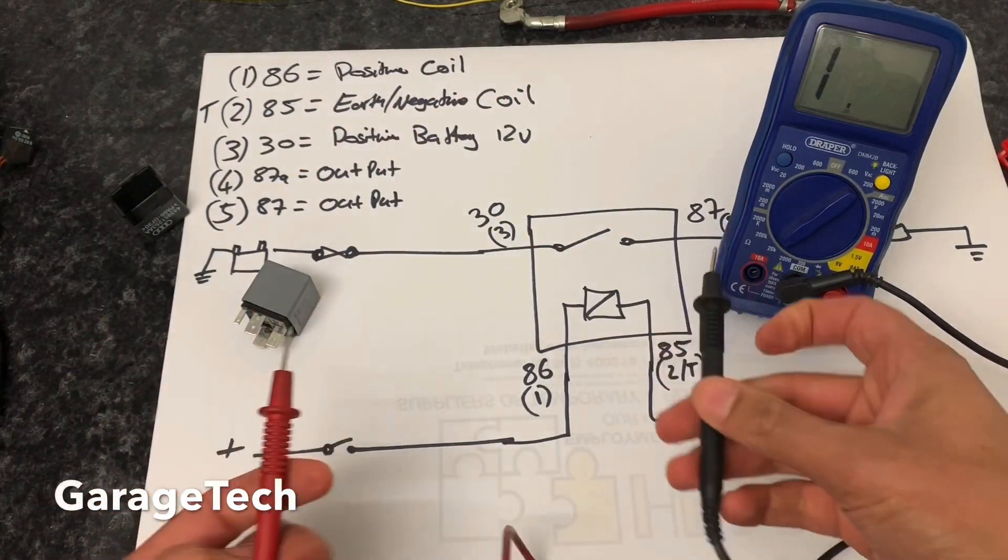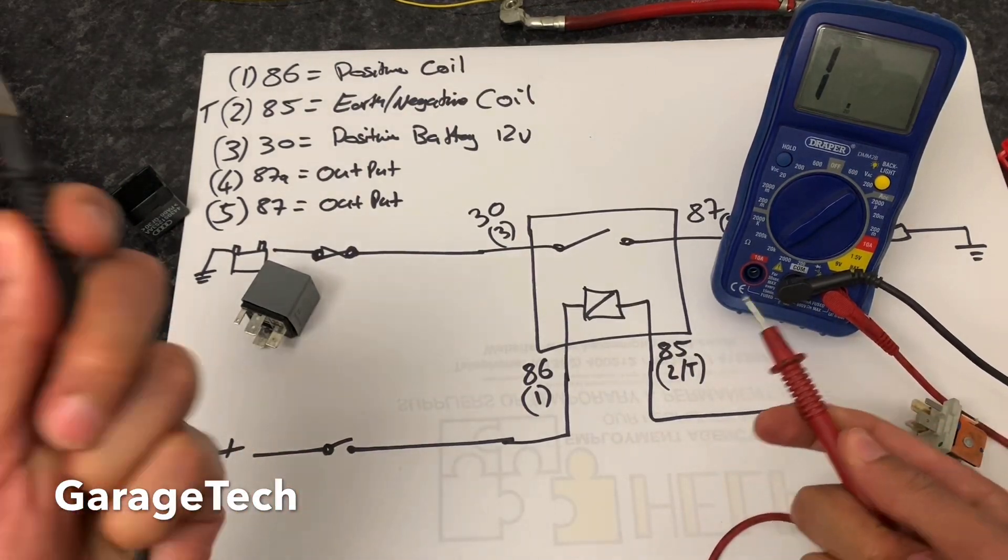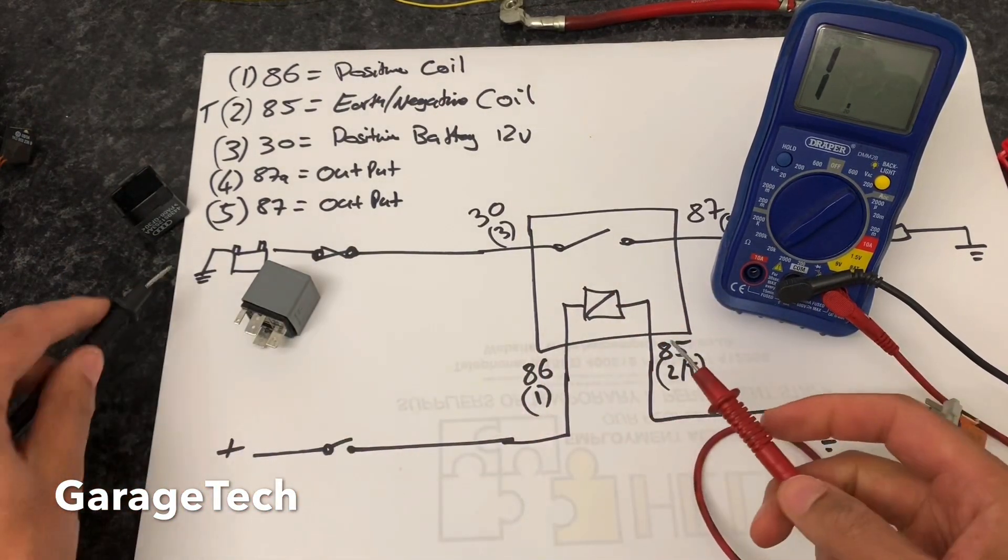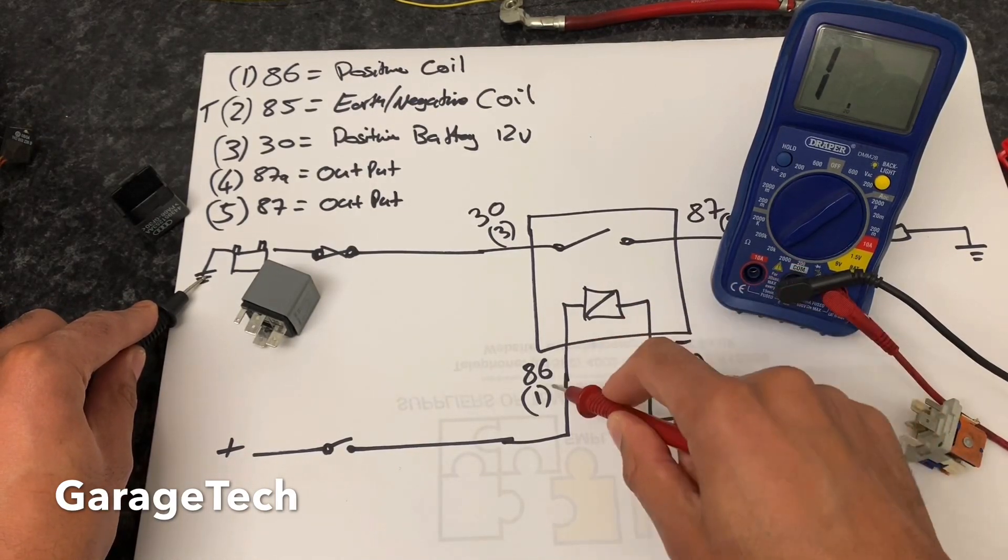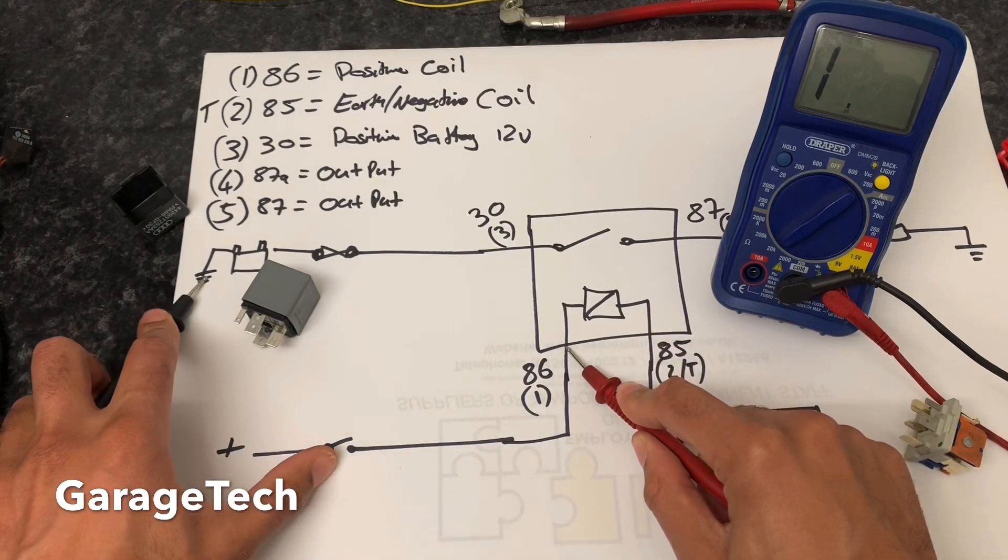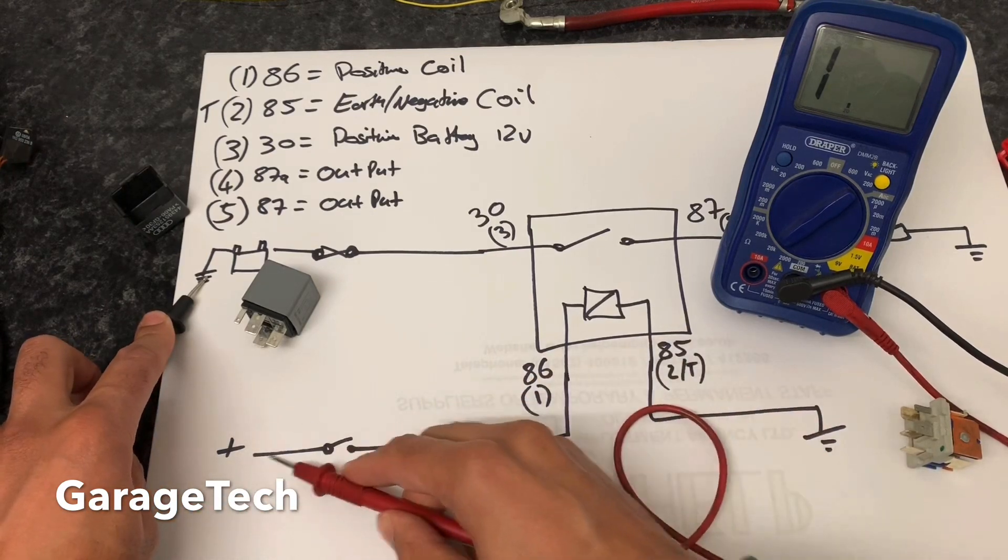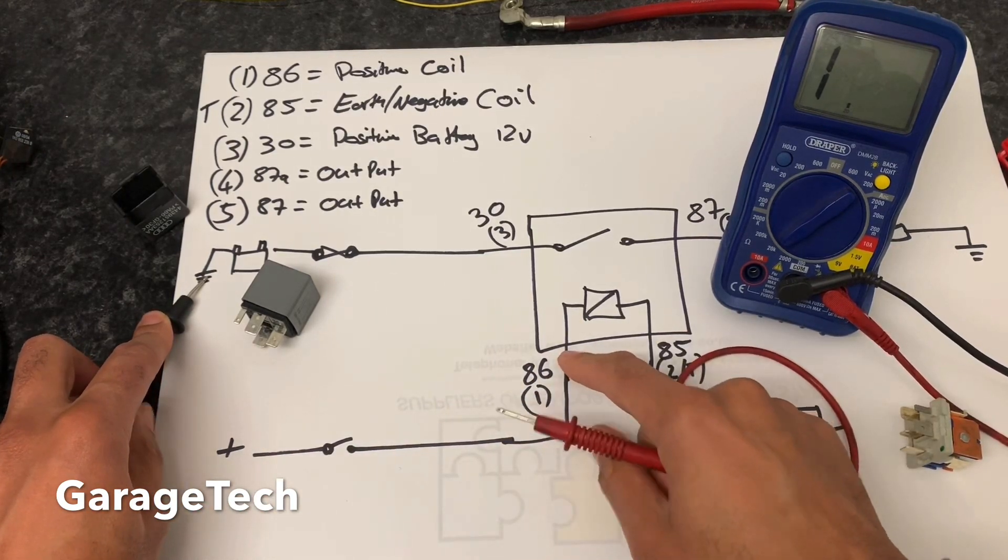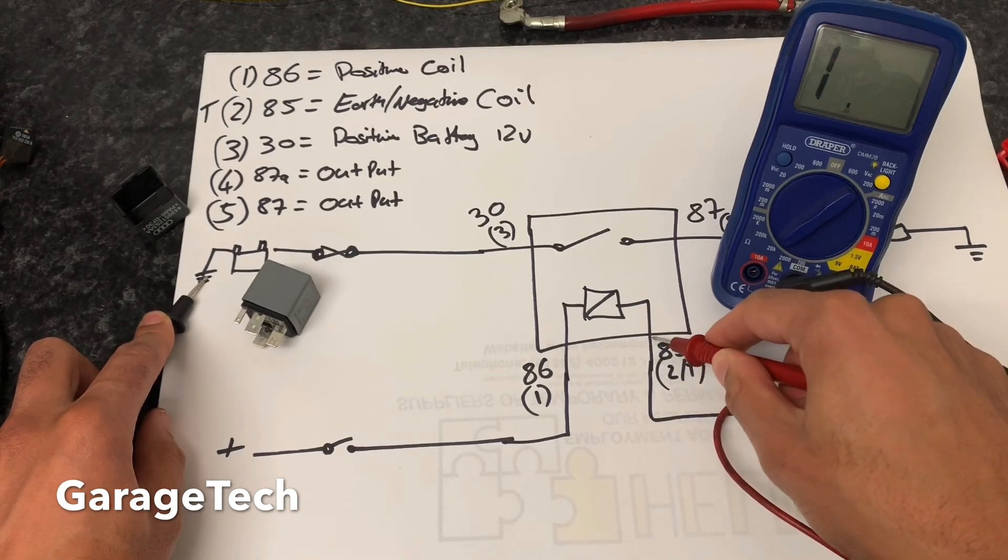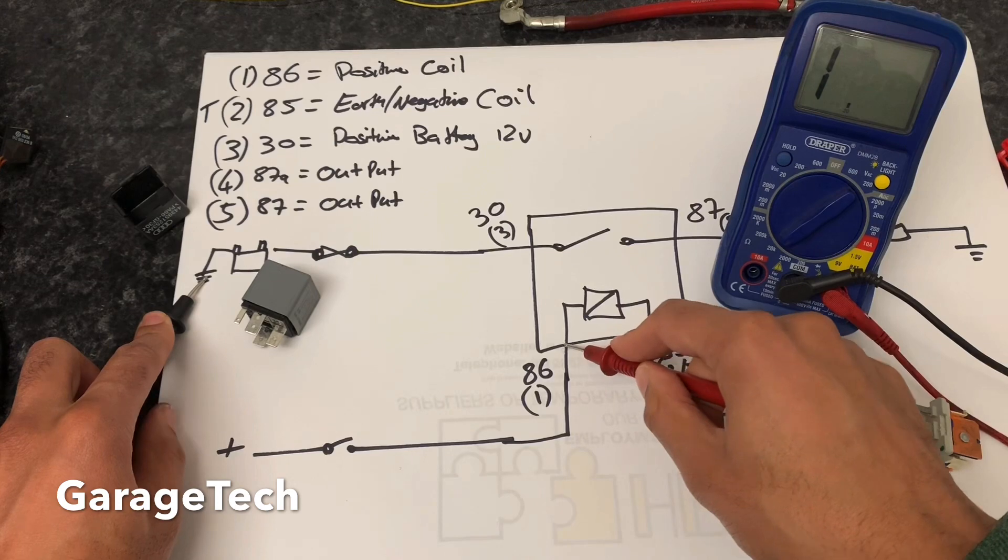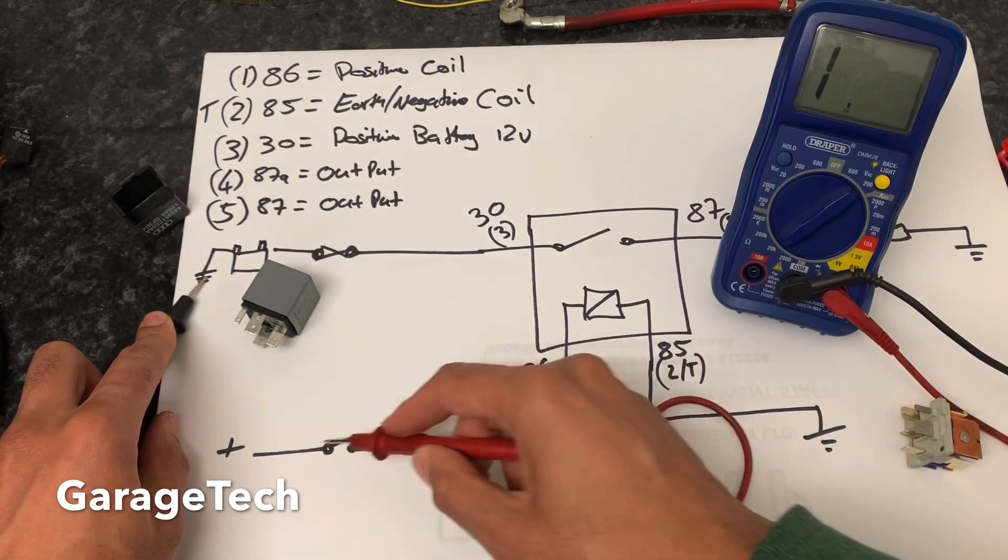If you want to check that in your car, what you do is you'd put your black lead, or your negative, on a good earth point, so battery earth for example. Then I'll be checking here at pin 86 with that switch closed. I'd want to see 12 volts on my multimeter because that'd be your voltage coming into here. With that switch still closed, I've got 12 volts there, I should then see zero volts on this side. If I'm measuring here and I haven't got 12 volts, then I need to trace this wire back until I find 12 volts. You might need to go back to this switch.